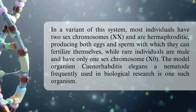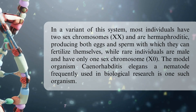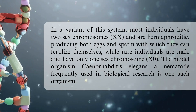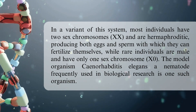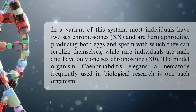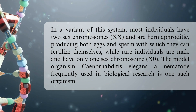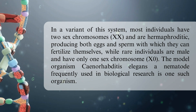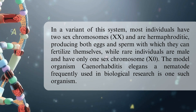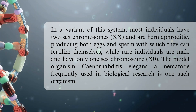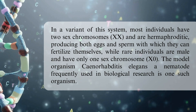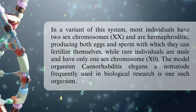In a variant of this system, most individuals have two sex chromosomes and are hermaphroditic, producing both eggs and sperm with which they can fertilize themselves, while rare individuals are male and have only one sex chromosome.